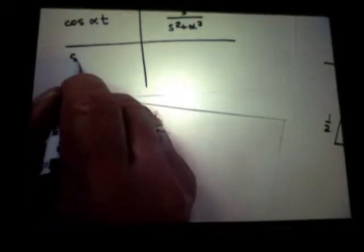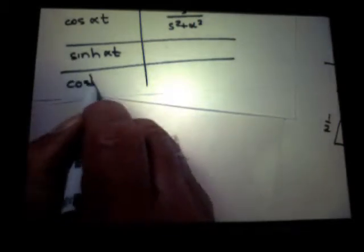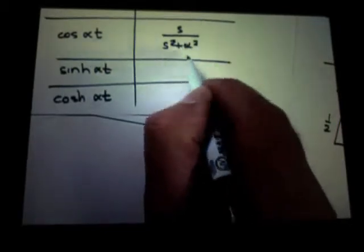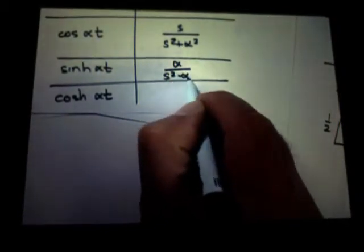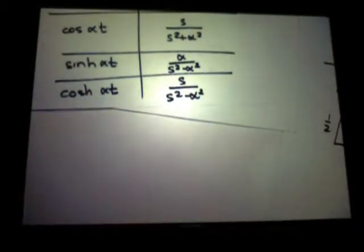Cosh is going to be s over s squared minus alpha. Yes, that is true. So we have sinh and cosh. Would you like me to post a table of these things? Yeah, if you want to. Okay, will do. There are some... and for homework, what others do you want us to work out? I'm going to give you some.